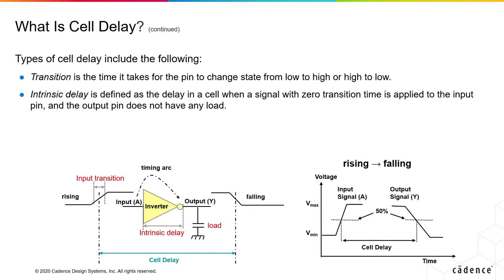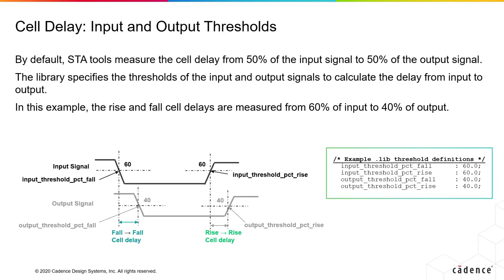Transition time is when the pin changes state from low to high or high to low. Intrinsic delay is the delay of the cell when there is no input transition or output load. The propagation delays are measured from the input threshold percentage point to the output threshold percentage point. Most commonly, we measure the cell delay from 50% of the input signal to 50% of the output signal. These input threshold percentages and output threshold percentages are given in the libraries for both rise and fall.